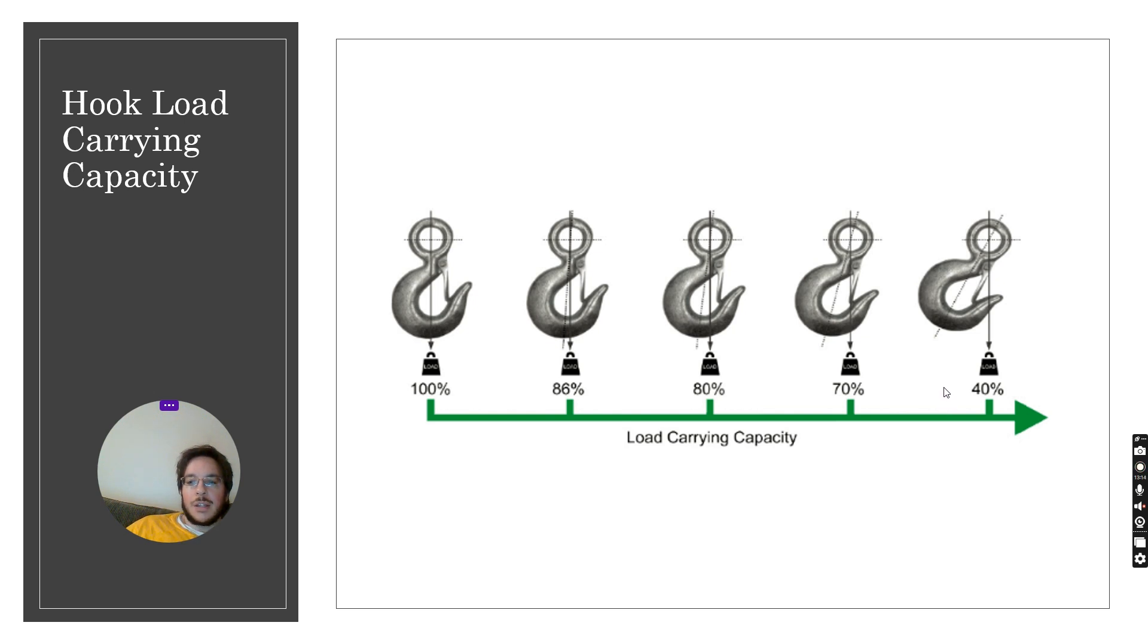Again the angle of the hook determines the capacity of the hook. Once we start to angle the hook slightly, a slight angle reduces our load by 14 percent and a 45 degree angle reduces our load by 60 percent. So we want to be careful to understand the angle or try not to angle our hook.